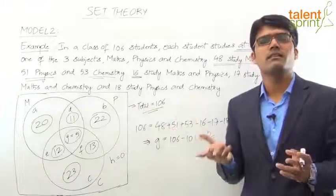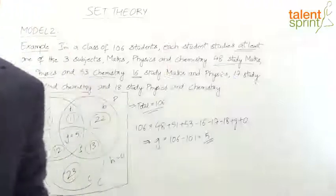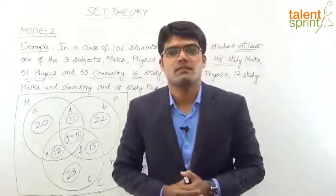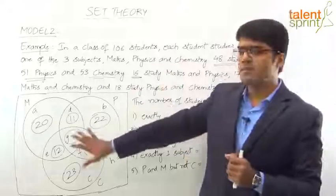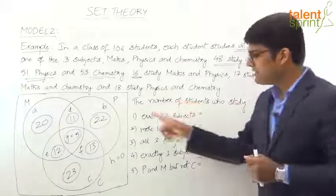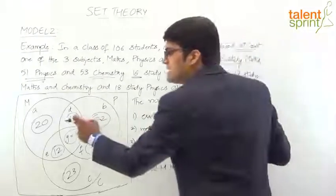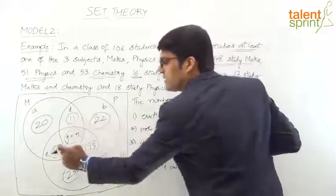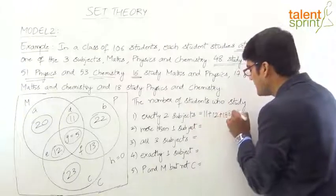Let's quickly solve the 5 questions given with this data. First question: the number of students who study exactly two subjects. The regions are D (Maths and Physics), F (Physics and Chemistry), and E (Maths and Chemistry) — that is, 11 + 13 + 12 = 36.